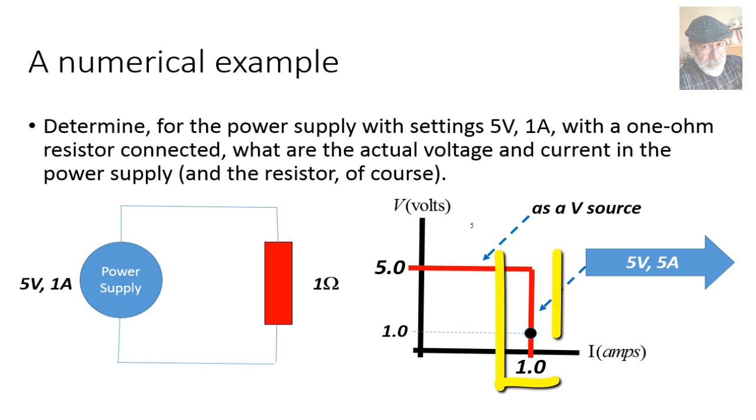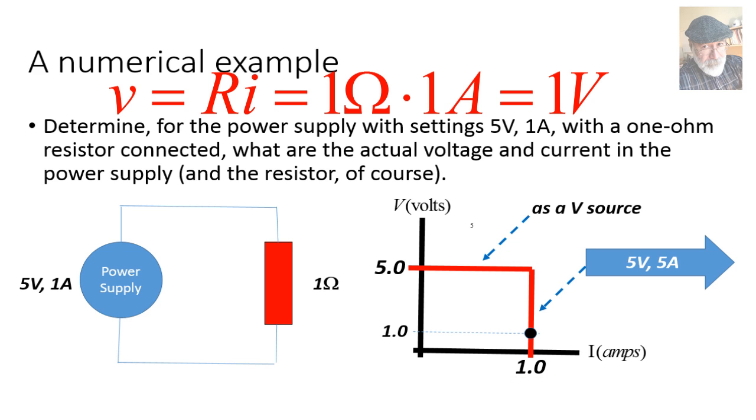So, we have to be on the vertical segment and the current has to be 1A, which implies, again, Ohm's law. 1 ohm, 1A, 1V. The voltage is 1V and the current is 1A.